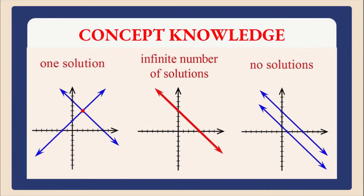Before starting the procedure, let us quickly recall what we have discussed in class. We know that when we represent a pair of linear equations on a graph, one of the following three possibilities can happen. Case one: when the two lines are intersecting at one point, you will have a unique or one solution. Case two: when the two lines are coinciding, you will have an infinite number of solutions. Case three: when the pair of lines are parallel to each other, you will have no solution.